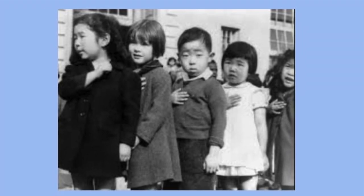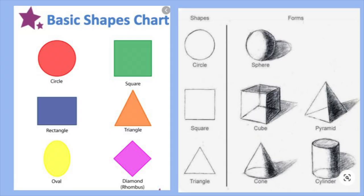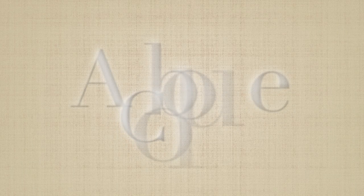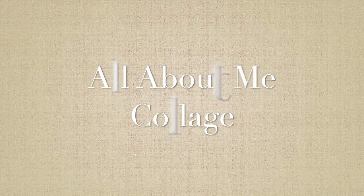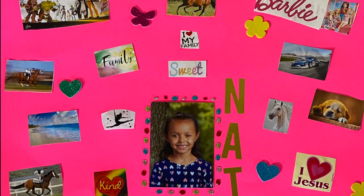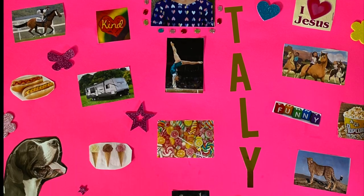Not only did students learn about Dorothea Lange, they also learned about art elements such as different types of lines, shapes, and colors. In this lesson, students created an All About Me collage, incorporating different types of photographs and images, and also using the art elements they learned about.